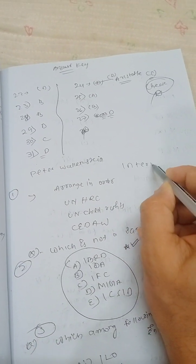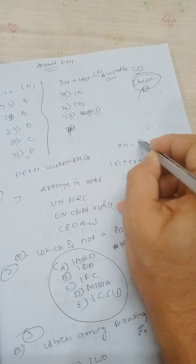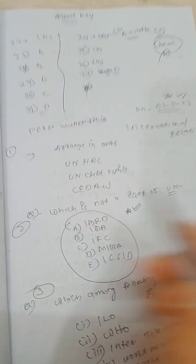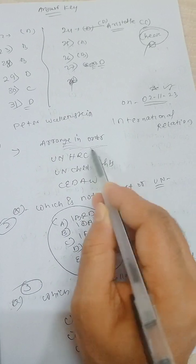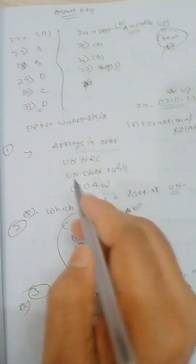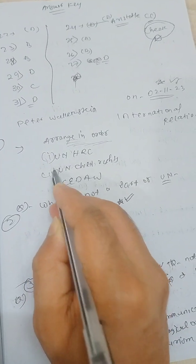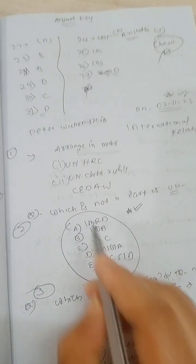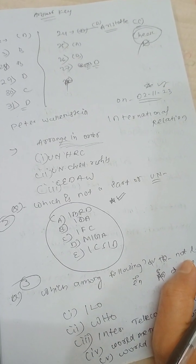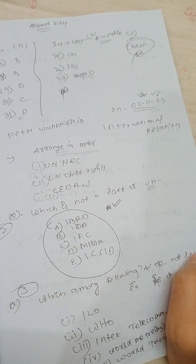Today I bring a few important questions from international relations. The first question asks: arrange in chronological order the different acts regarding human rights. The first option is the United Nations Human Rights Council, the second is United Nations child rights, and the third is the Convention on Elimination of All Forms of Discrimination Against Women.